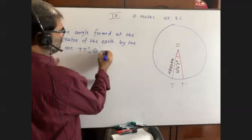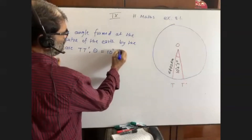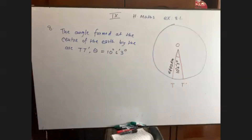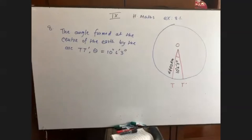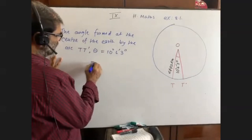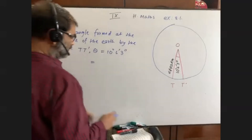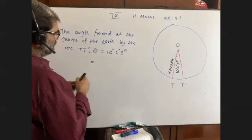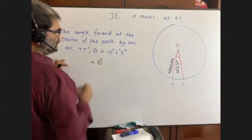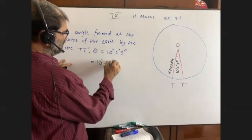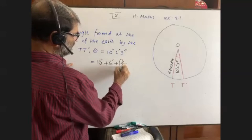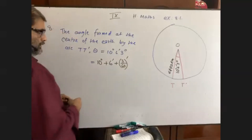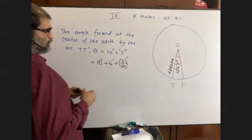Theta is equal to 10 degrees, 6 minutes, 3 seconds. As I told you, this degree value needs to be converted into radian. So try to convert it: 10 degrees, 6 minutes, 3 seconds — where 3 seconds means 3 divided by 60 minutes. Side note, like the previous one: 60 seconds equals 1 minute.